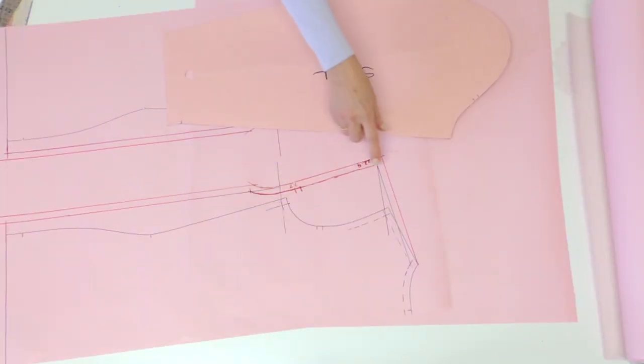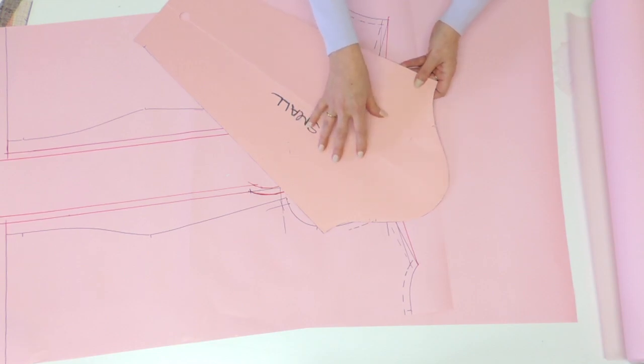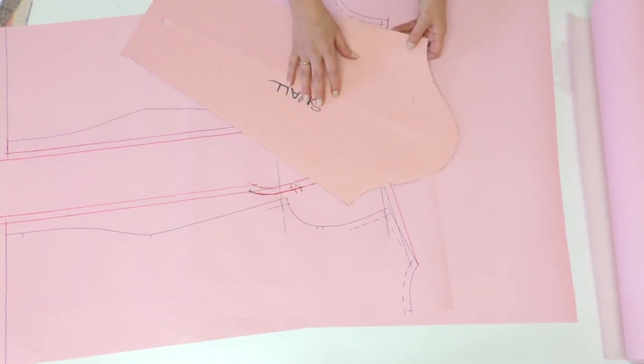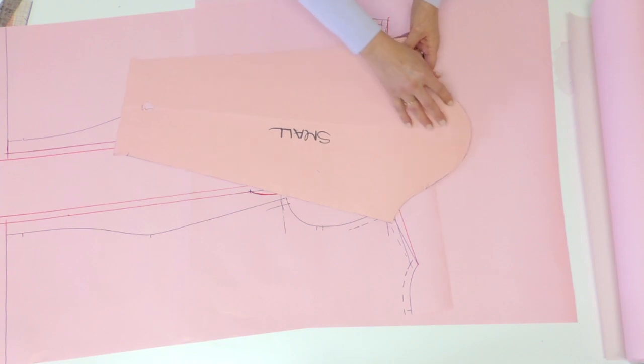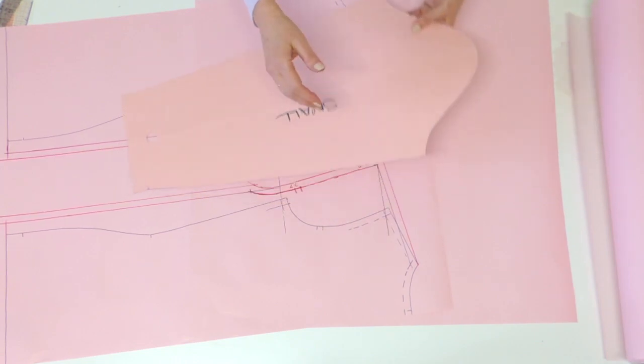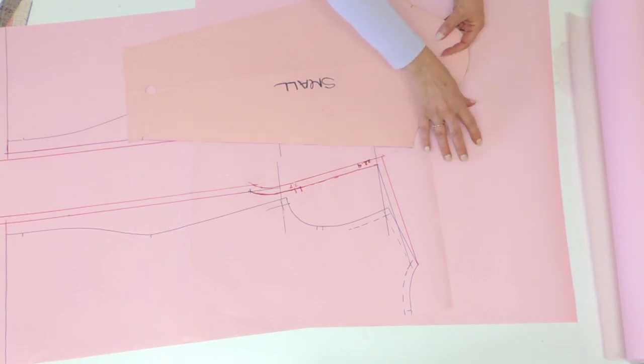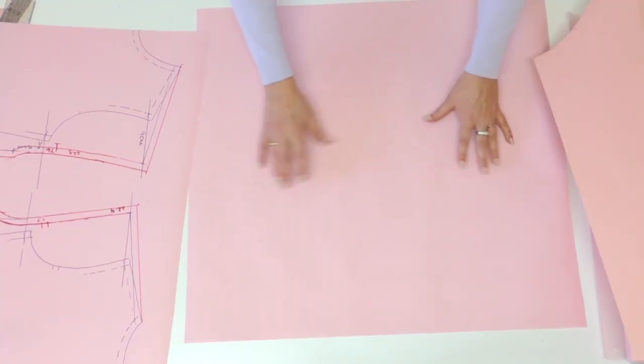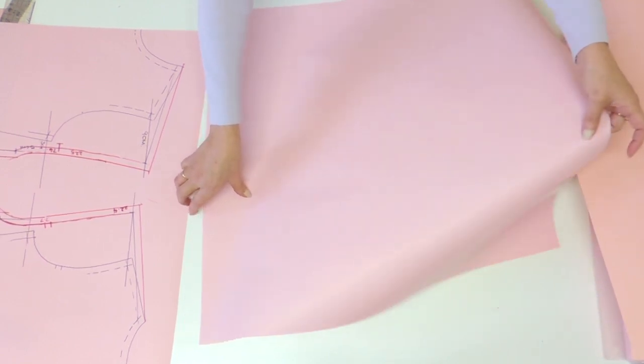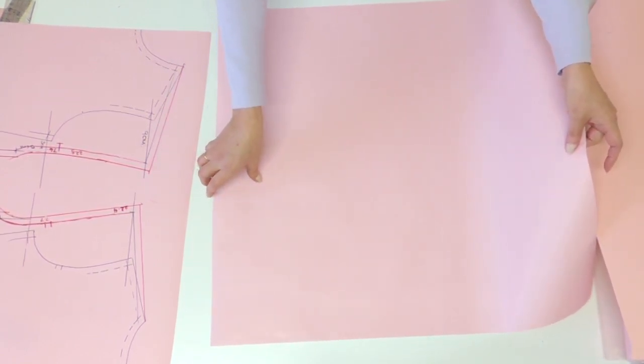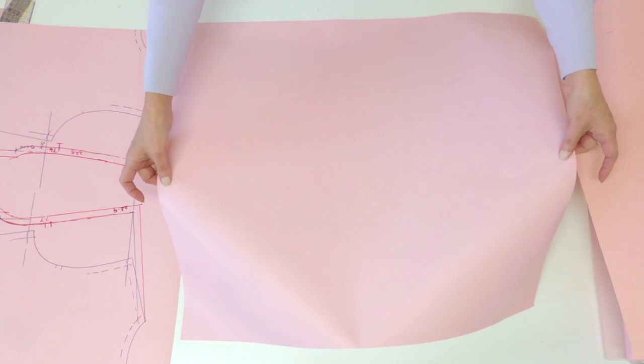Now to do the sleeve matching with the drop shoulder that we just did, some people are doing it by modifying the sleeve block that goes with the bodice they use but I think since none of the lines are going to stay there and this is a brand new armhole, I'd rather do a brand new sleeve. So take another piece of paper and fold it in the middle because most of the construction is going to be symmetrical.